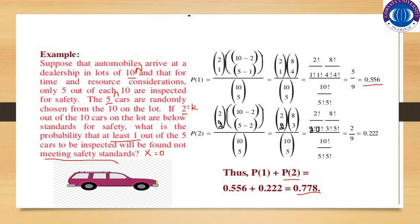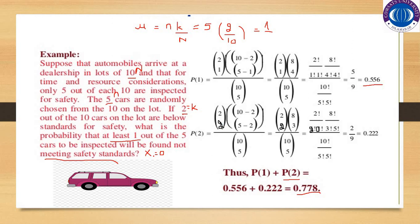To find the mean for this particular example, we substitute: mu equal to n times k over N, which is 5 times 2 over 10, equal to 1. This means that on average, one car in a lot of five inspected cars is not meeting the safety standard.